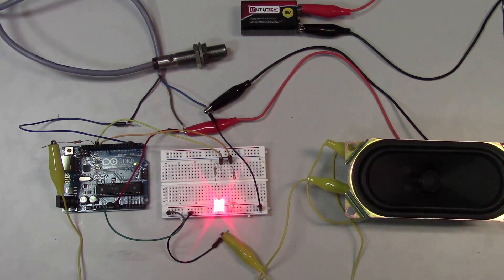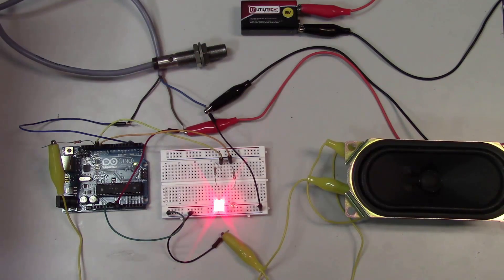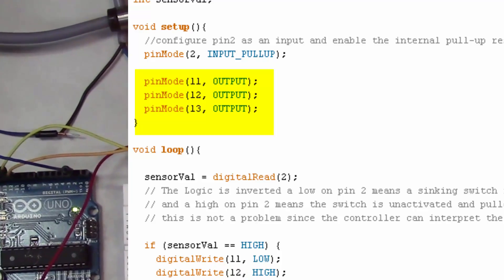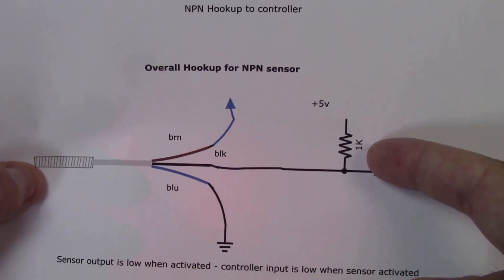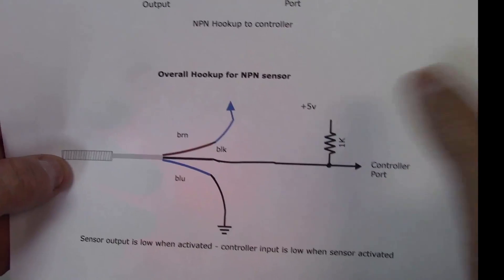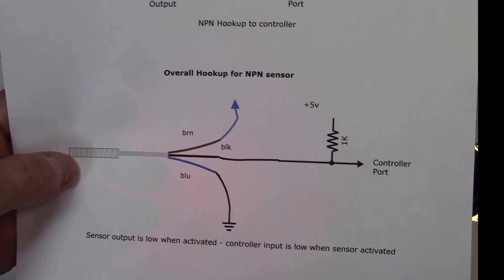So as far as our program goes all we're really doing is setting up pins 11, 12 and 13 as outputs and pin 2 is input and it's important that we set up pin 2 as an input pull up pin because what we're doing is we're using a resistor that's internal to the Arduino and this turns out to work out real well it means we don't have to put a resistor in there.